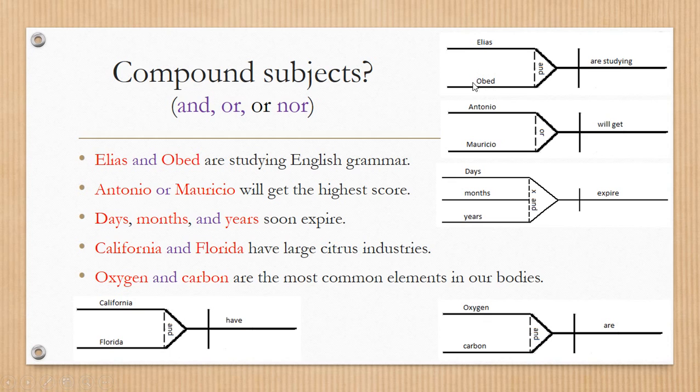The one down, the second one, Obed. That connector is going to be placed here. And pay attention to this line, this dotted line. This dotted line means that Obed is joined or linked to Elias. So Elias and Obed. Now pay attention to that connector.